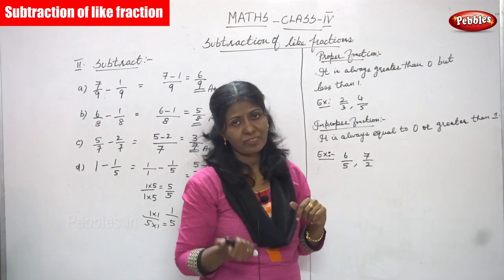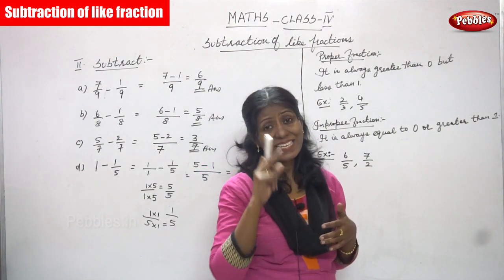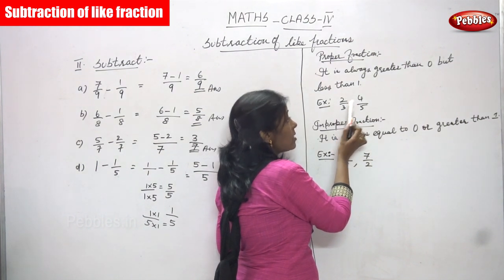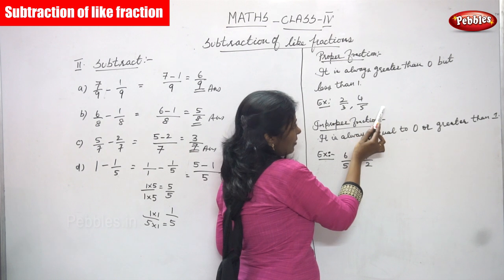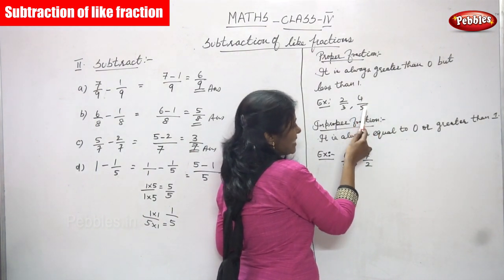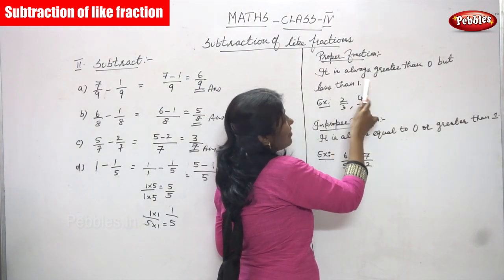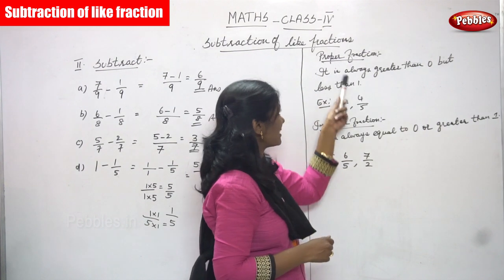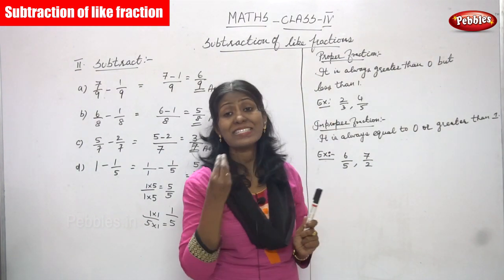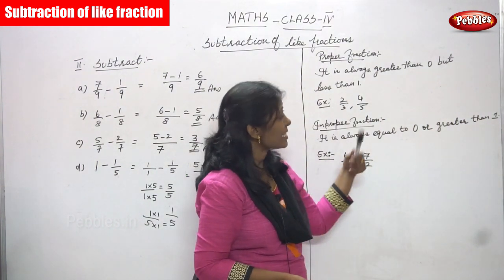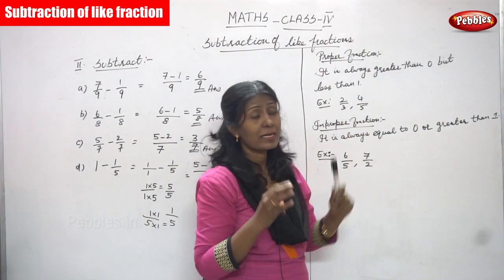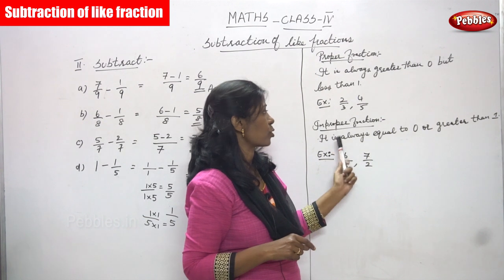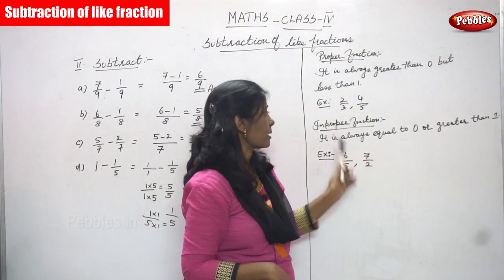A proper fraction always has the numerator less than the denominator. For example, 2/3 and 4/5 are proper fractions — in 2/3, the numerator 2 is less than the denominator 3; in 4/5, the numerator 4 is less than the denominator 5. The value of a proper fraction is always greater than 0 but less than 1. An improper fraction is always equal to 0 or greater than 1.